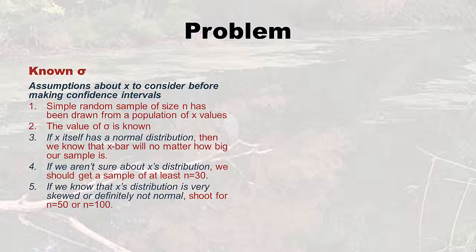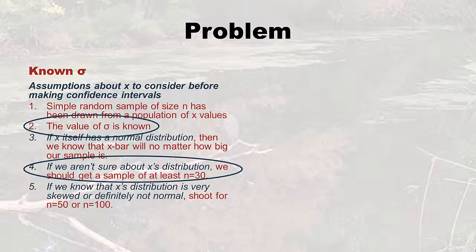Remember back in the last lecture: when you know the population standard deviation, you also have to consider some assumptions about x before you make your confidence intervals. One is obviously you have to know the population standard deviation — that's one of the things you have to really have before you use the z table. Also, if you're not sure of x's distribution, you really should get a sample of at least 30. And if you know it's not distributed normally, like it's skewed, you need even more, but at least 30. Those two requirements can limit you a lot.